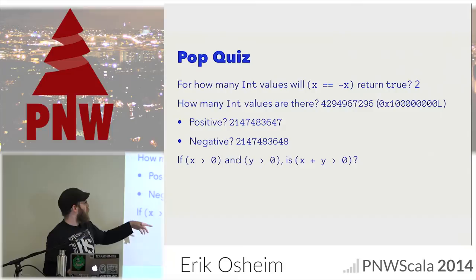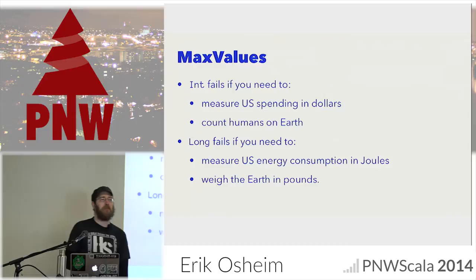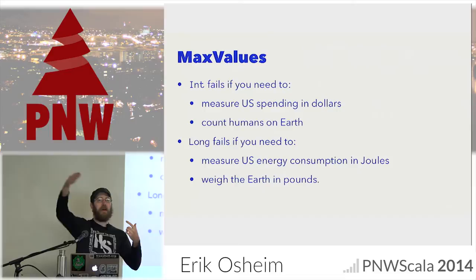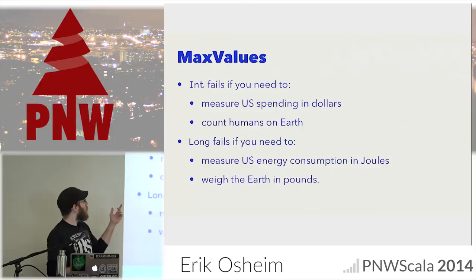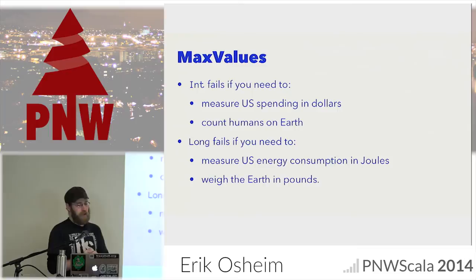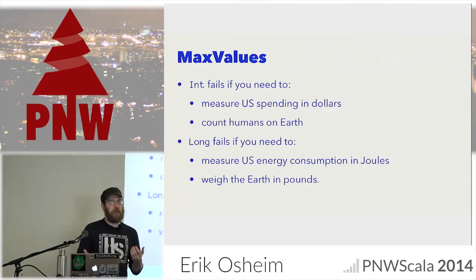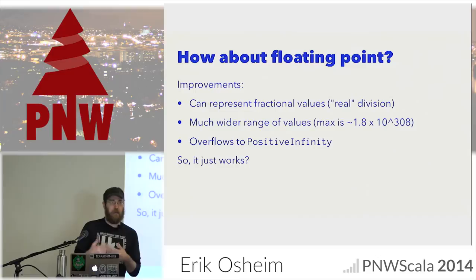If you've got two positive numbers and you add them, is the result positive? No — you have overflow issues, and those are particularly bad in loops. Scala's Range, for a long time, had serious bugs where if you gave it a big increment over Ints, you could overflow, go negative, and end up with an infinite loop. Int is pretty bad if you need to measure U.S. spending in dollars or the number of humans on Earth. Long is better but will fail to measure U.S. energy consumption in joules or the weight of the Earth in pounds. Integer types are easy to understand, but when they fail, they fail really badly.